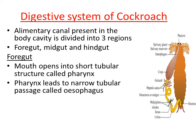Very next to the esophagus, the crop is located. The crop is a very prominent, sac-like structure — the largest part of the alimentary canal. This sac-like structure stores food temporarily. All food taken by the cockroach does not directly enter the intestine; it is temporarily stored in the crop, where food is properly mixed. So the crop is used for temporary storage of food.